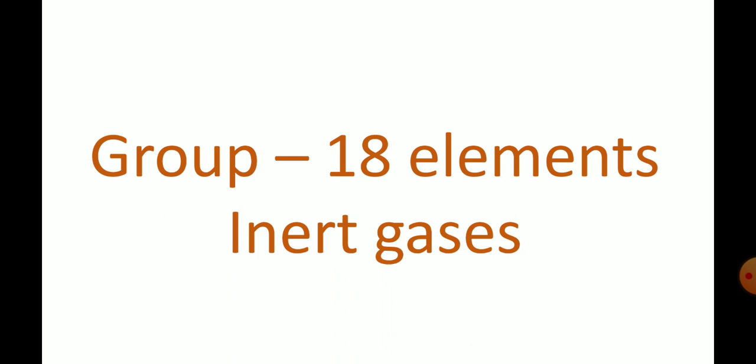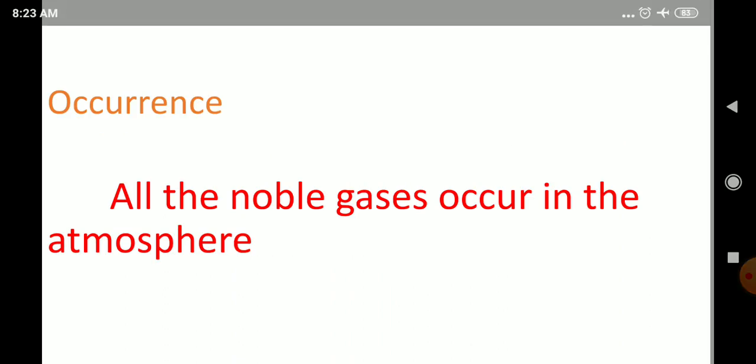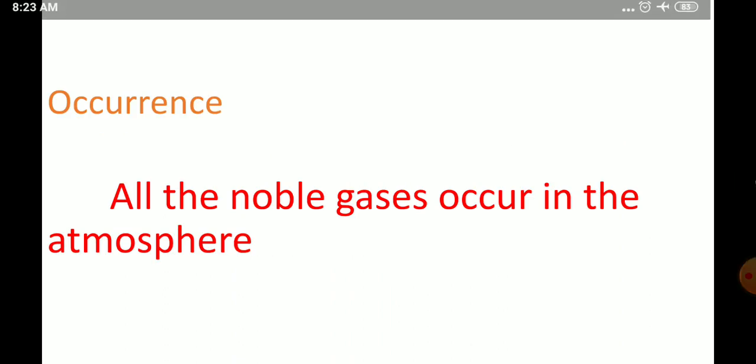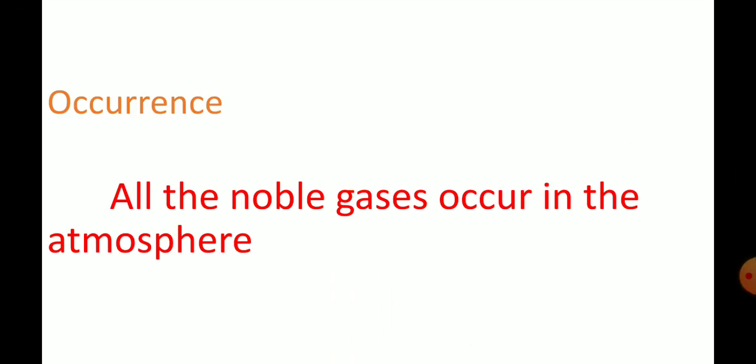We will discuss their occurrence, from where we get these compounds, their physical properties, chemical properties, and structures. First, let us see about occurrence. Mostly all the inert gases — their main source is the atmosphere. In the atmosphere, they normally exist as gases. So that is the occurrence of noble gases: all the noble gases occur in the atmosphere.